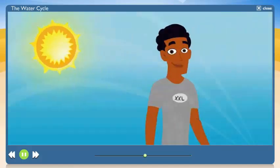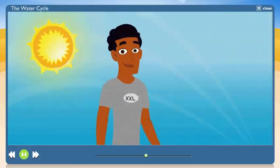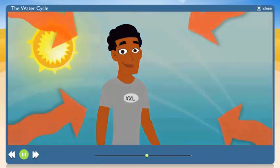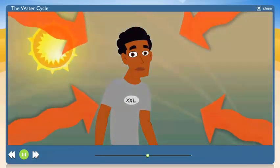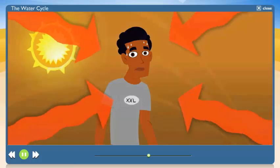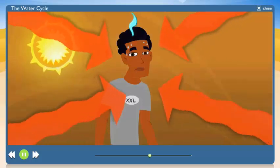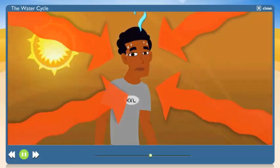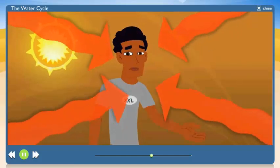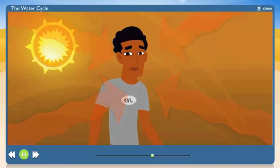So if water vapor is invisible, how do we know it's there? Sometimes you can feel it. You know, like on those hot, humid days. Oh, yeah. When just kicking the ball around makes you sweat. Exactly. Sweat evaporates, too. That's another way water gets back into the air.